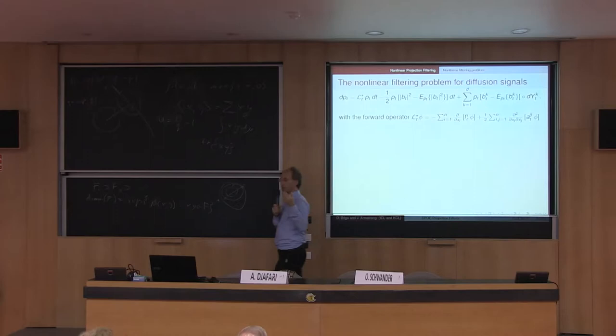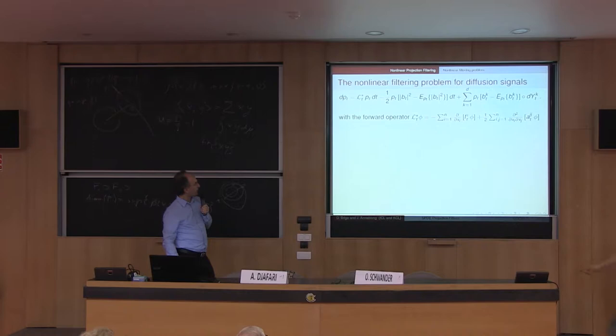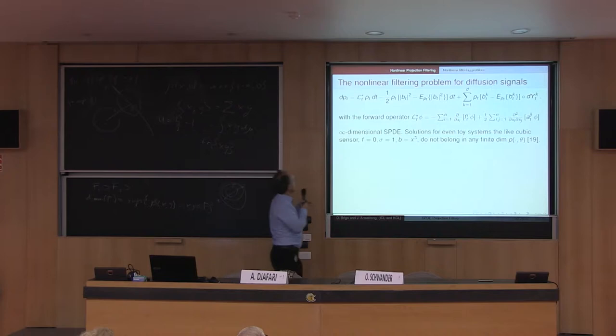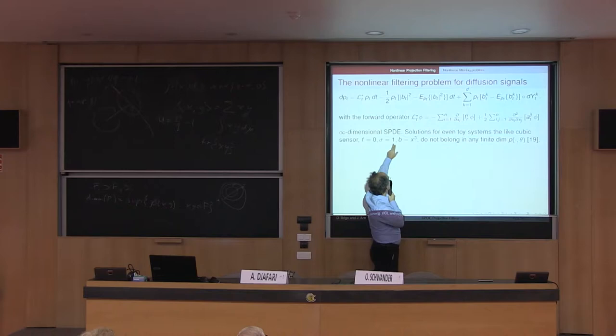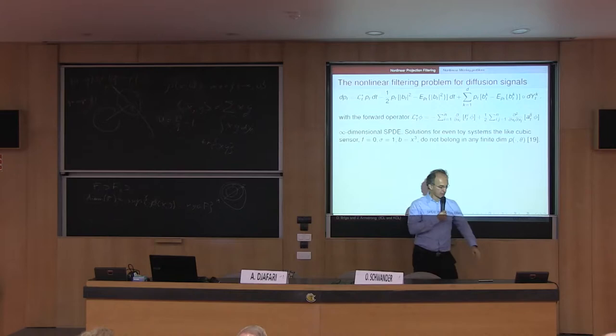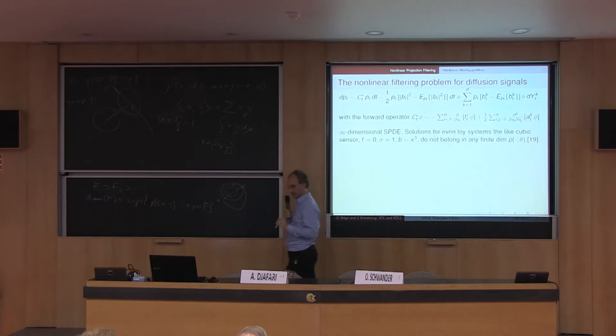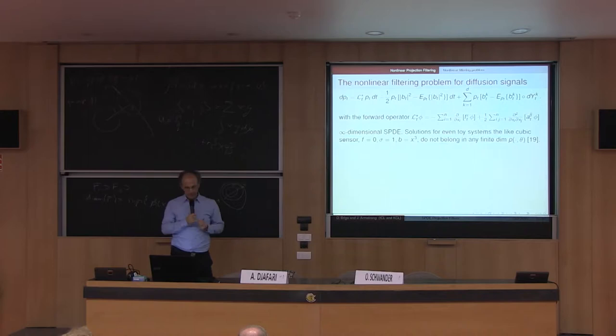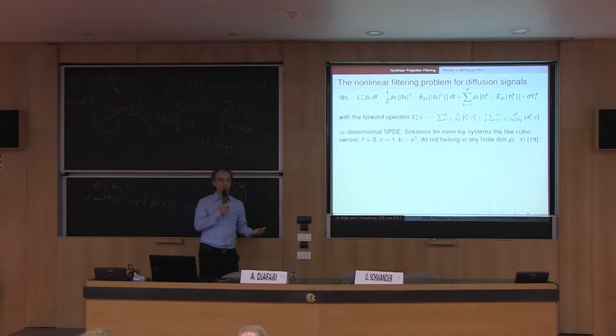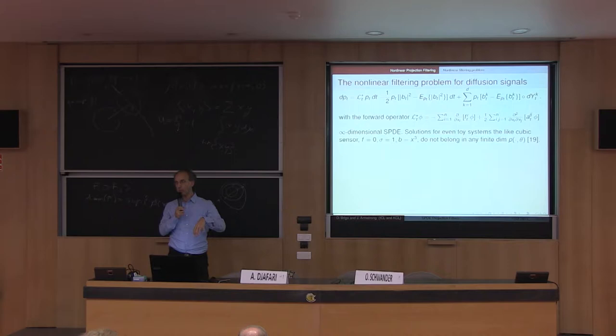This stochastic PDE does not live in any finite dimensional family — not Gaussian mixtures, not exponentials, nothing. Even a toy model with no dynamics in the state, a standard deviation one diffusion coefficient, where you observe the cube of the signal, does not give you a finite dimensional manifold. So we have a problem of dramatic curse of dimensionality, because our equation is infinite dimensional, and we want to approximate it with a finite dimensional system for computer implementation.